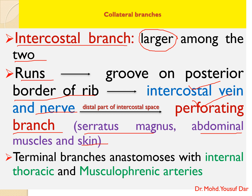The terminal branch of the intercostal artery anastomoses with the internal thoracic and musculophrenic arteries, which are intrathoracic branches of the axillary artery.